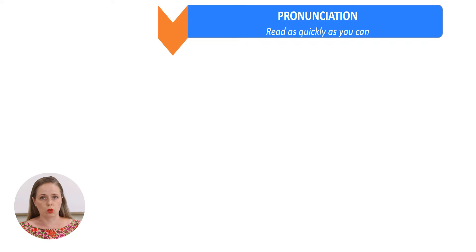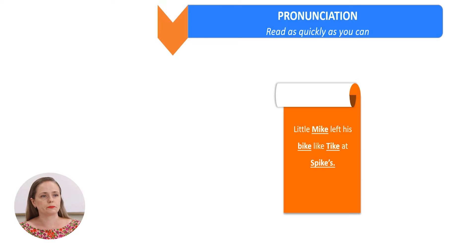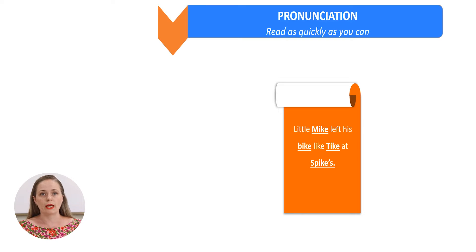We will begin with a warm-up activity. The first activity is pronunciation. We will practice the sound I. This is the first tongue twister that I have prepared for you. It is an easy one. I will read it twice. The first time I will read as slowly as possible for you to understand and repeat after me.